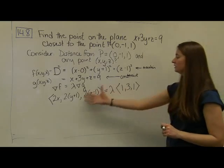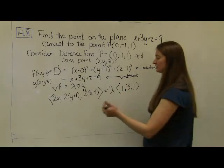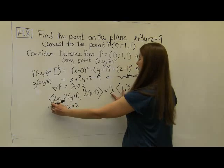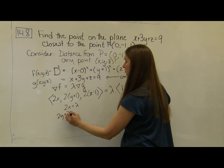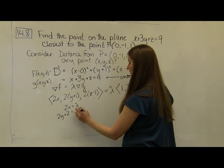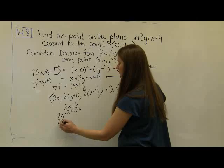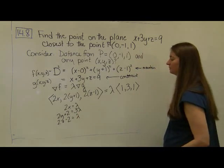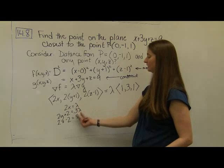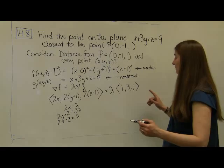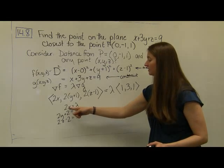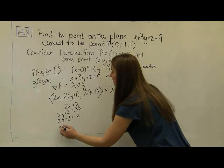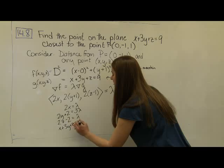We do this work and we come up with a system of equations to solve. Setting x components equal: 2x equals lambda. Setting y components equal: 2y plus 2 equals 3 lambda. Setting z components equal: 2z minus 2 equals lambda. These three equations have four unknowns — x, y, z, and lambda — so I also need to include the constraint equation x plus 3y plus z equals 9.